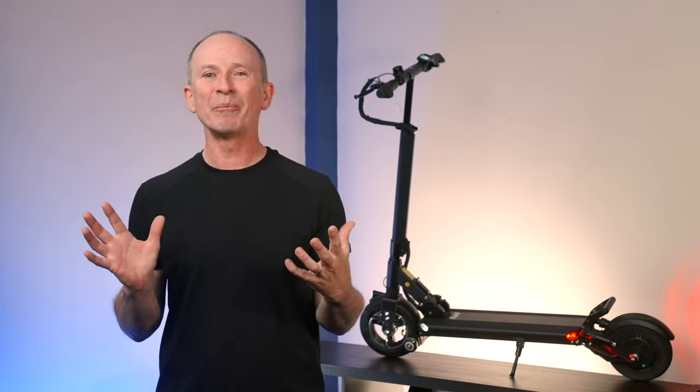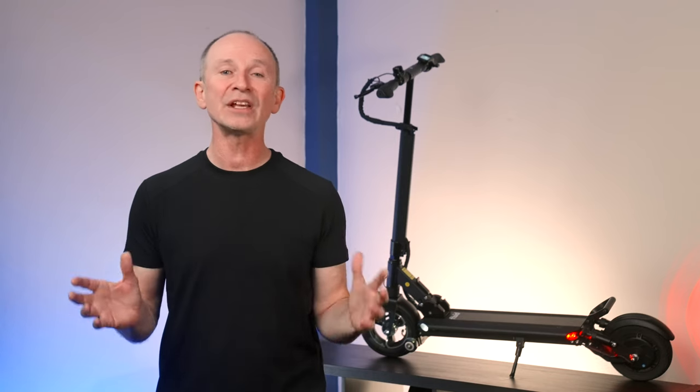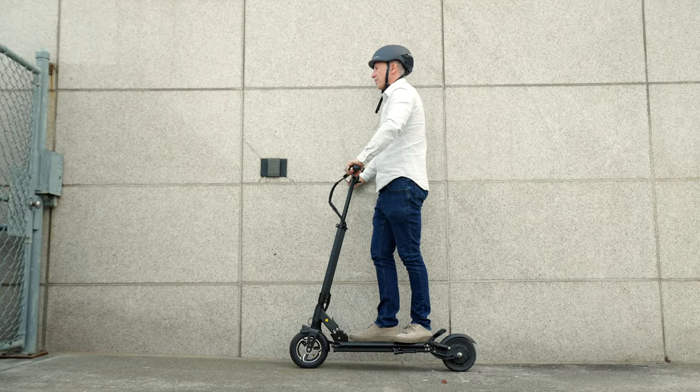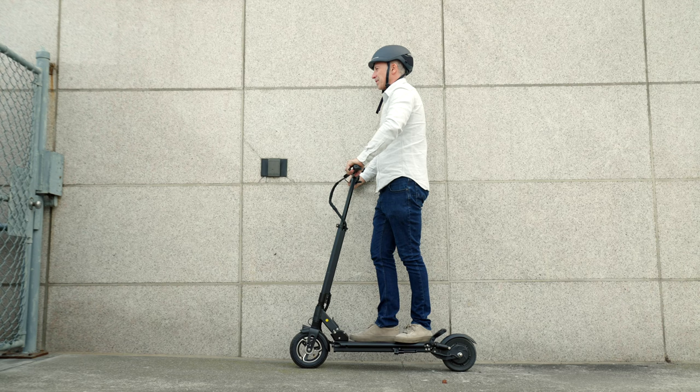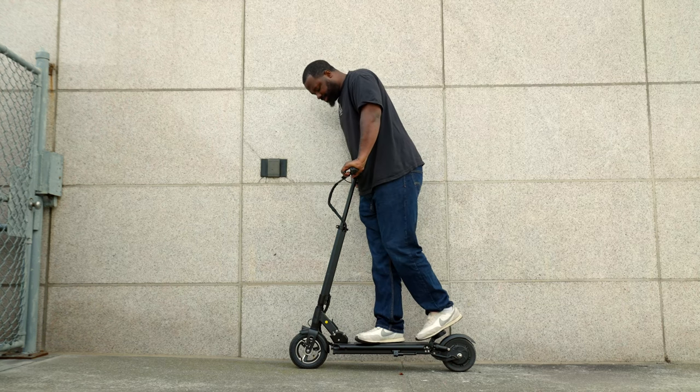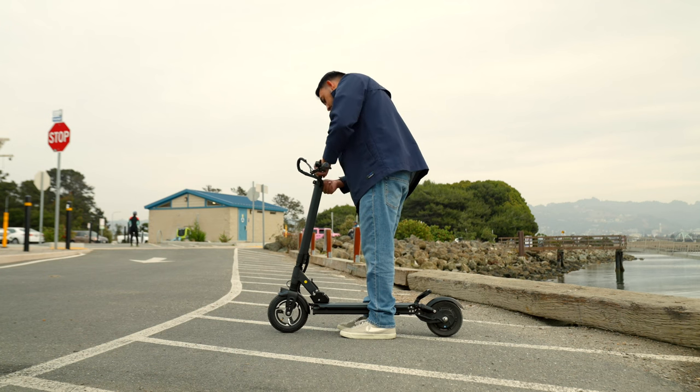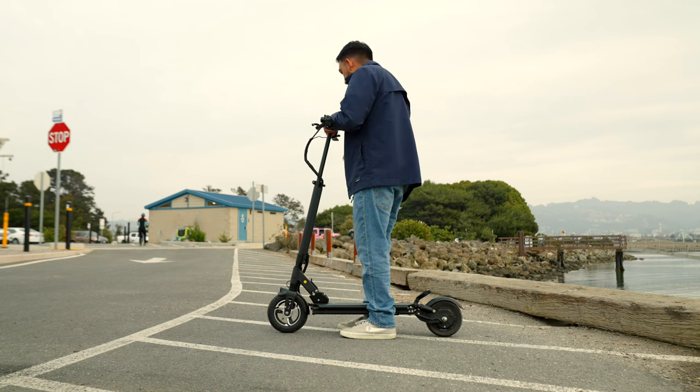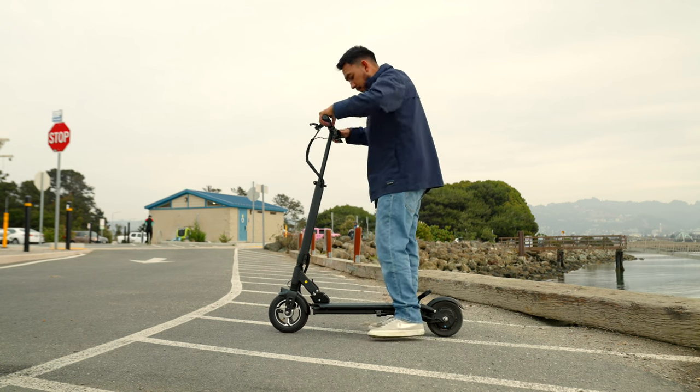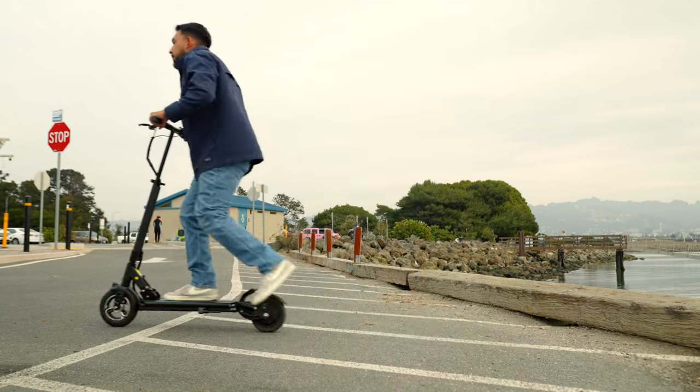One advantage this type of scooter has over basically every other type of scooter is adjustable handlebar height. Now, if you're average height like myself or taller like Raymere, you're going to want to keep them all the way up. But riders under 5 foot 8 inches tall, that's 173 centimeters for these civilized people watching, will appreciate being able to set them lower basically at any height they want.